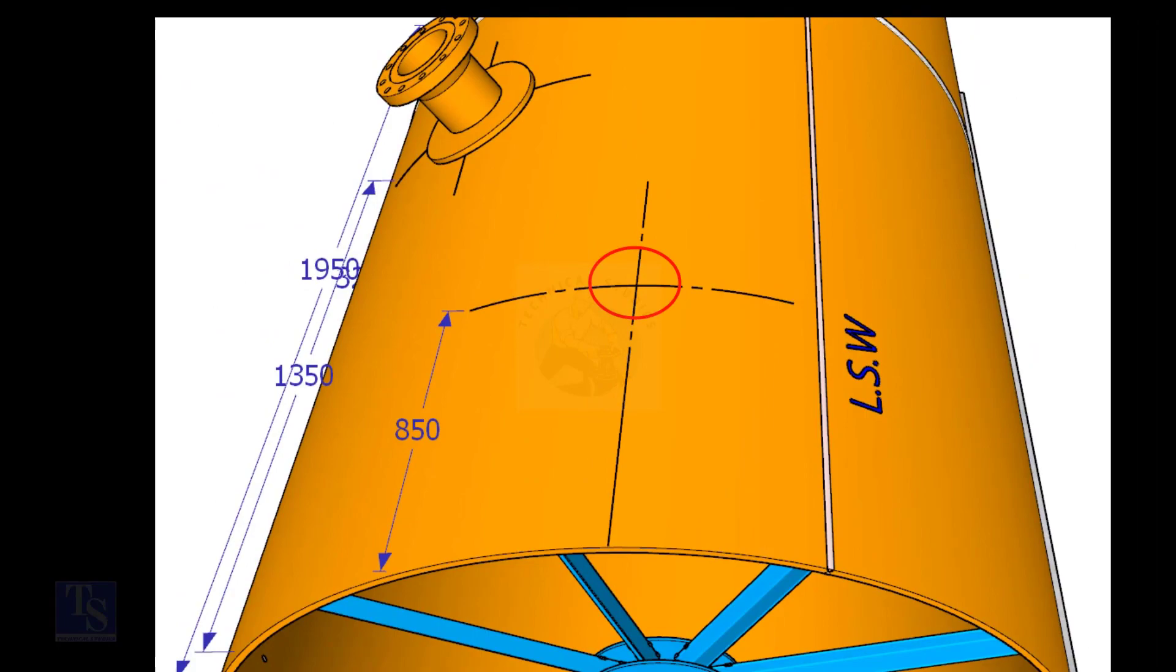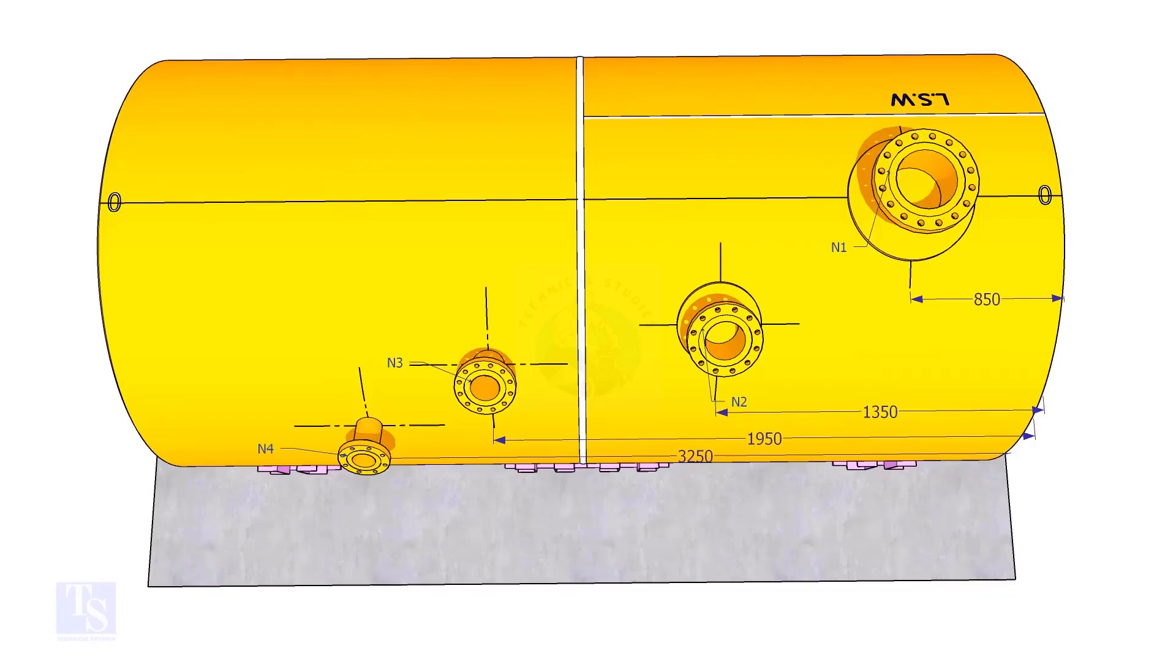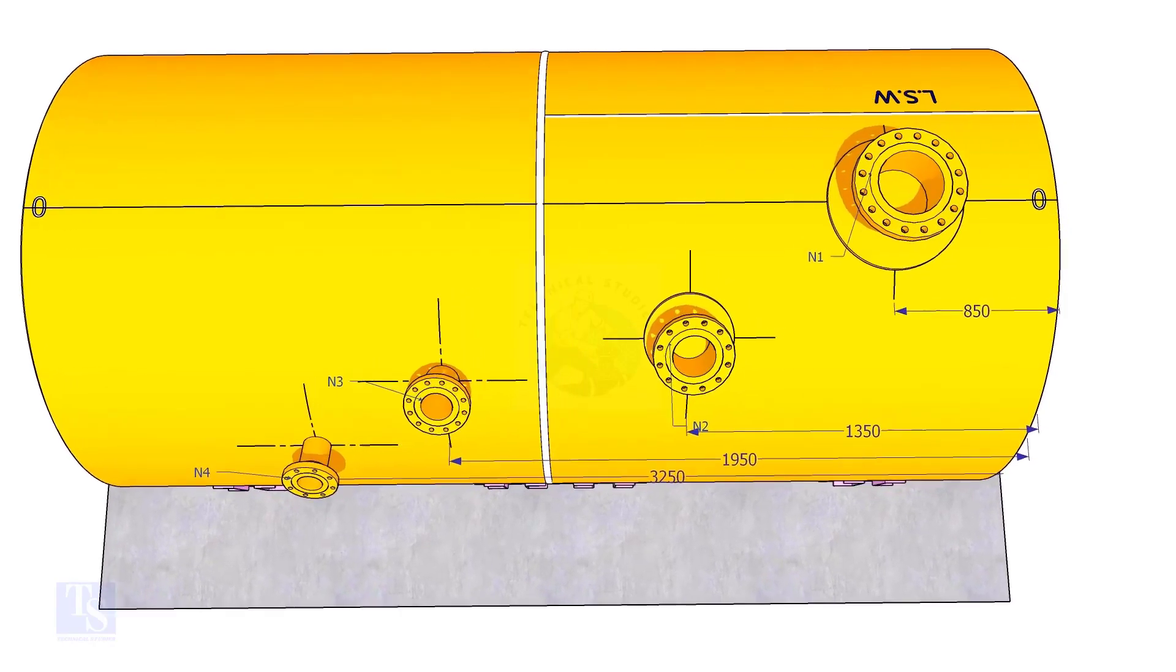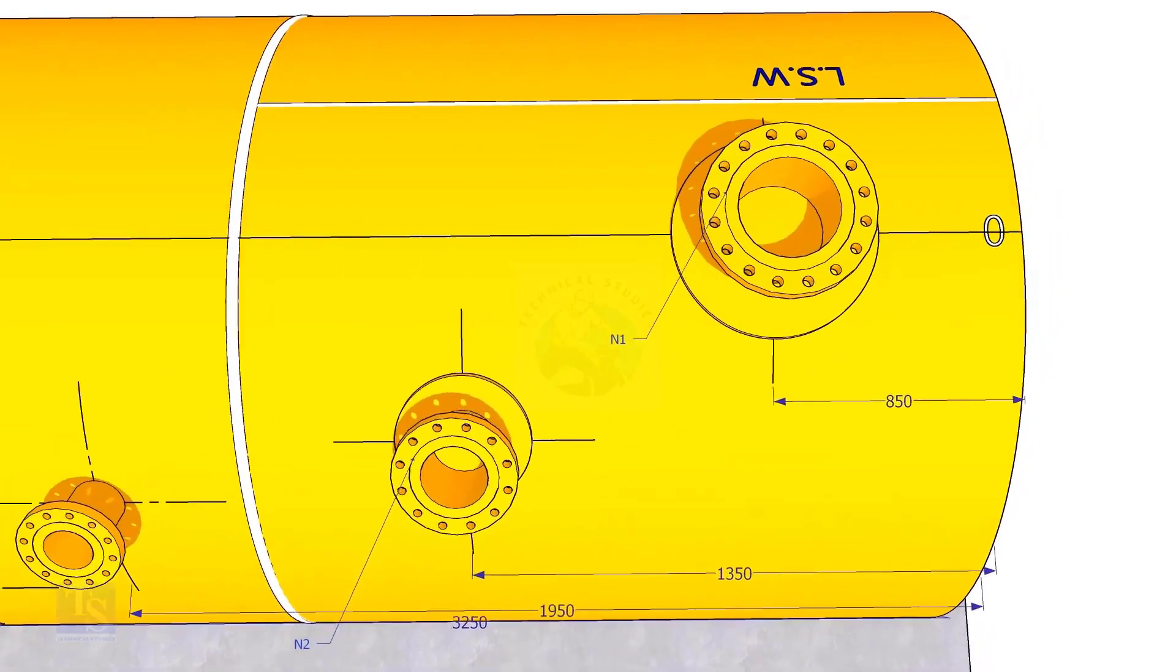This is the center of the nozzle N1. Extend the nozzle N1 center line up to the other end of the shell and mark it as zero degree.